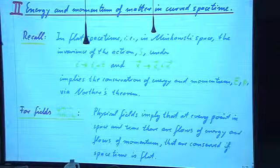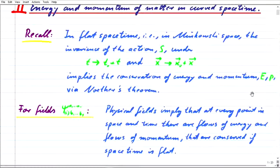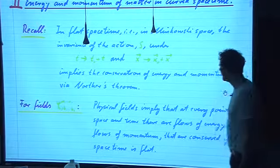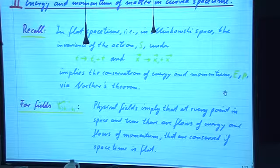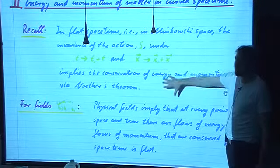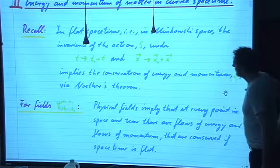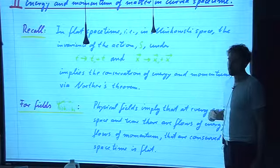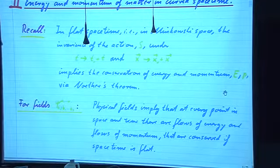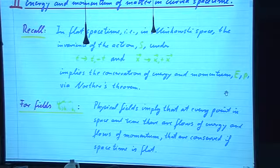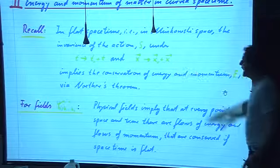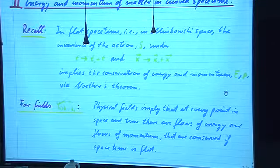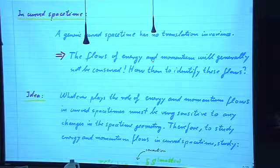What about curved space? Physical fields exist and flow through space-time, and as they flow, they carry energy and momentum with them. So physical fields carry energy and momentum, and overall, while this energy and momentum is flowing around with the fields, overall they are conserved. So whatever flows away from some region must be flowing into some other region.